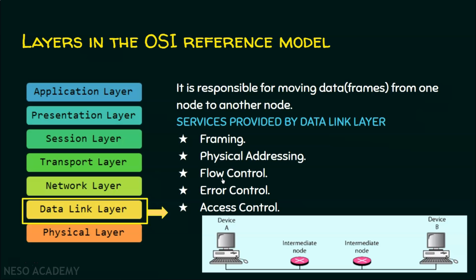Flow control is a service of both the data link layer and the transport layer. Error control helps identify if a frame is corrupted, lost, or damaged. Access control applies when two or more devices are connected to the same link — the data link layer determines which device has control over the link at a given time. After a device's time is over, it becomes another device's turn to use the link.